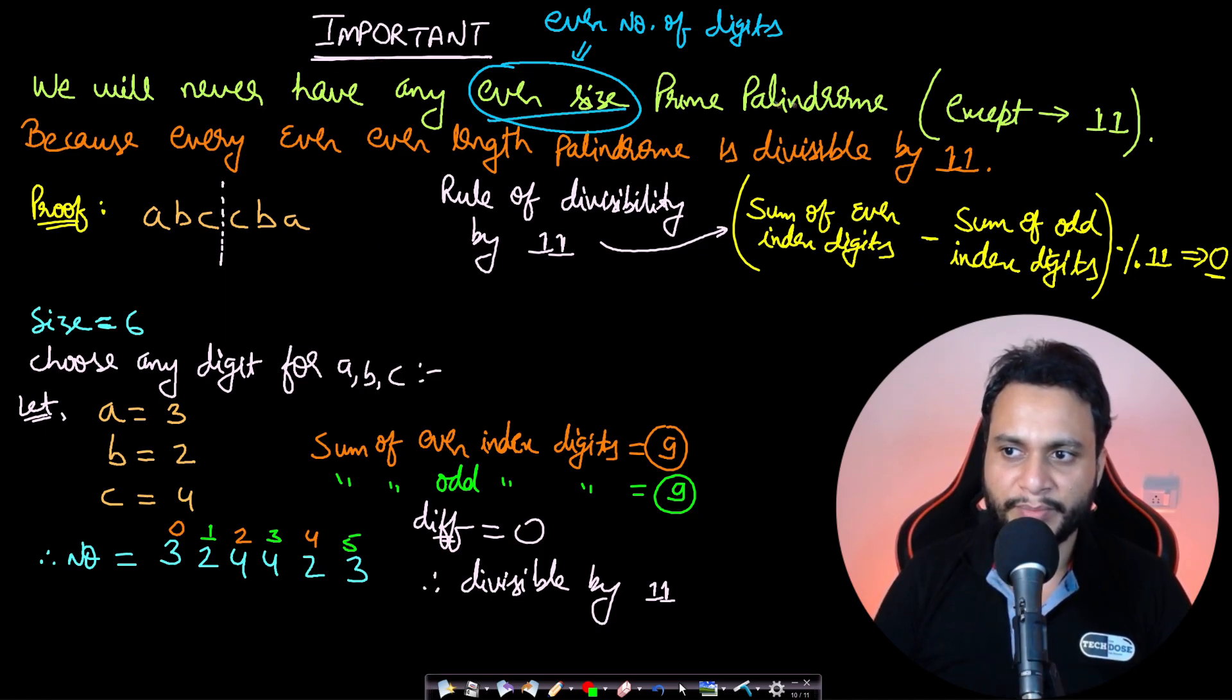Now before we move on to the solution code, there's a very important point to consider. We will never have any even size prime palindrome—even size means even number of digits—except for 11, because every even length palindrome is divisible by 11. Let's suppose we're taking 6 digits, which is an even number of digits, and I can represent the 6 digits such that we make a palindrome abc taken on the left side, cba taken on the right side.